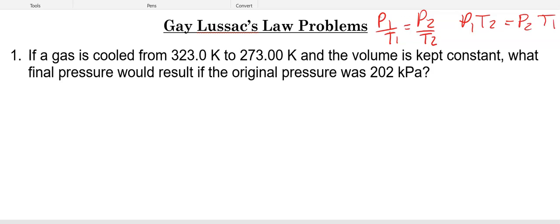So now reading this problem, if the gas is cooled from 323K to 273K, so T1 is 323. And the volume is kept constant. And again, for Gay-Lussac, volume is constant. What final pressure would result if the original pressure was 202 kPa? So P1 is 202 kPa and P2 is our question mark.